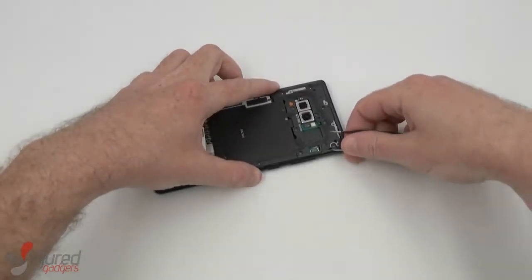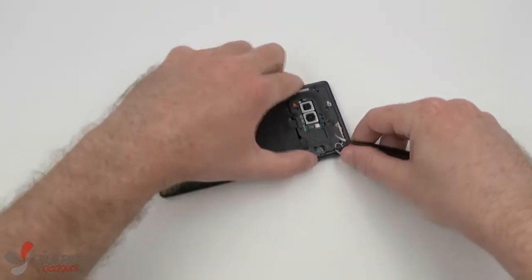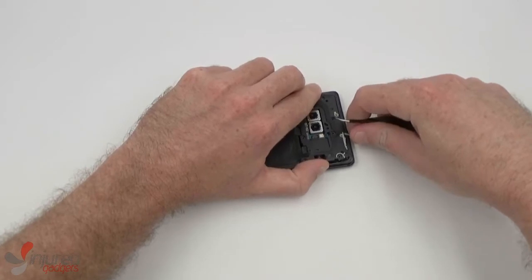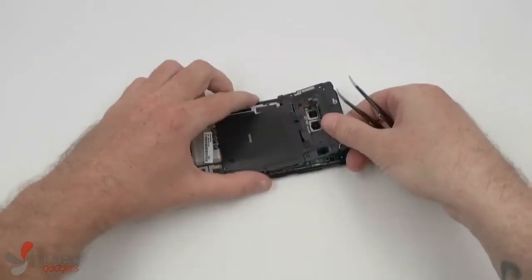Now our next step is to remove the NFC coil from the top part here. You can just use tweezers or a nylon spudger to pry it loose.